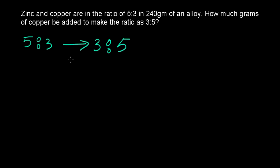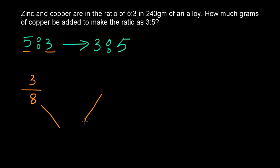We can apply the rule of allegation here. Copper is being added, so we take the quantity of copper in the mixture, which is 3 by 8 — since the ratio is 5 is to 3, copper is 3 divided by 8. Pure copper is being added, so we write it as 8 by 8, which equals 1.